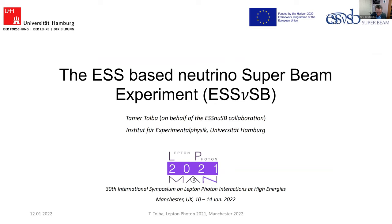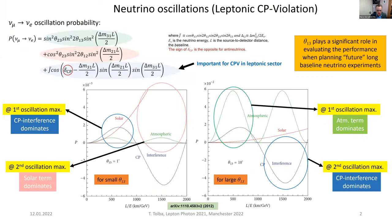Thank you very much, Marco. Good morning everyone. I will present the status of the ESS-based neutrino super beam experiment, or the ESS neutrino SB. Let me start with some fundamental principles on the physics of the experiment, beginning with this simplified neutrino oscillation probability distribution, where the oscillation probability depends on three terms: the atmospheric oscillation term, the solar oscillation term, and the accelerator oscillation term.